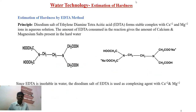Now we have to estimate hardness — that means measuring the amount of calcium and magnesium salts present in the water. For this, the principle is that we are using EDTA as a complexing agent. EDTA means ethylenediamine tetraacetic acid, and we are using the disodium salt of EDTA. This EDTA forms a complex with the calcium and magnesium ions present in the hard water. The amount of EDTA consumed in this reaction is equal to the amount of calcium and magnesium ions present in that water.